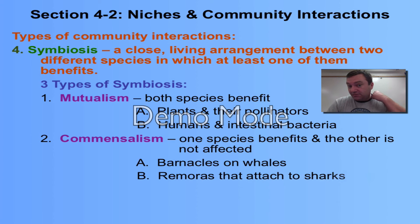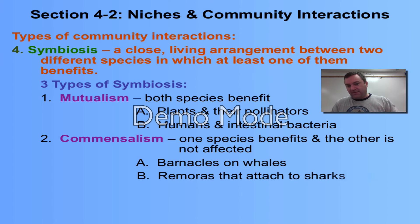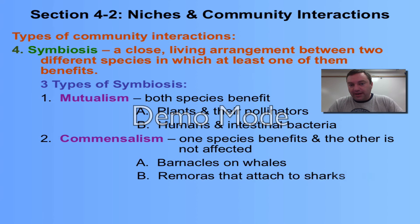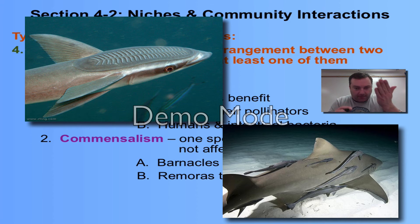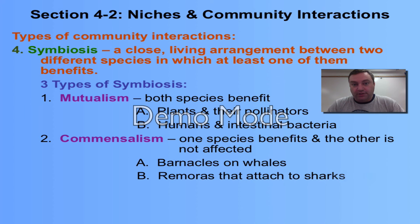Another example of commensalism would be the remoras found on a shark — fish on the bottom or top half of a shark. It's kind of like the barnacles: as the shark moves around and finds prey, there are basically some crumbs that fall off and the remora gets the scraps. Remoras are pretty cool — on the top of their head they have a suction cup so they can pop onto the shark and get a free ride.